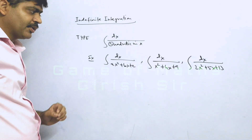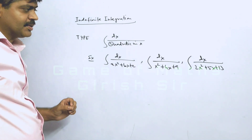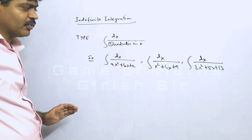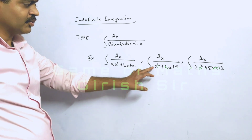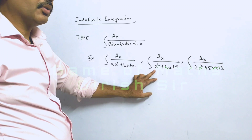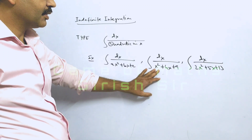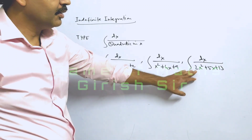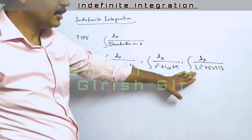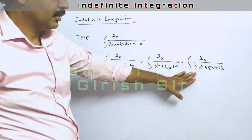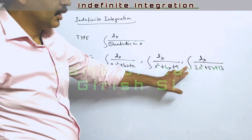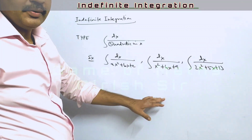When we start evaluating the integral, an important first step is to make the coefficient of x squared equal to 1. If it is not already 1 — for example, if the coefficient is 2 — you will have to make it 1 by taking 2 as a common factor out, and the other coefficients will change accordingly.